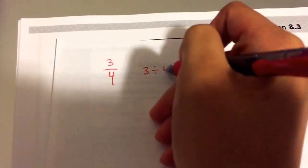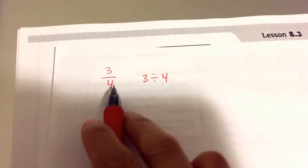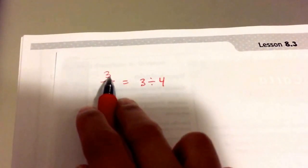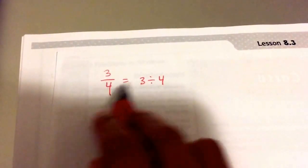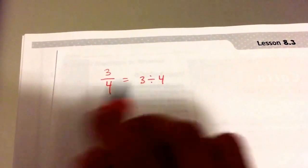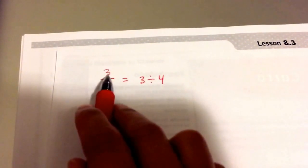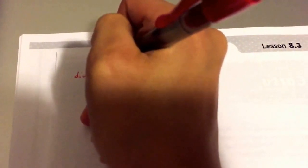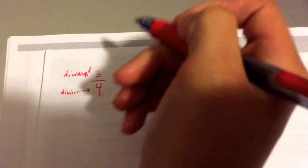3 divided by 4. 3 over 4, here's your numerator, and here's your denominator, is the same as 3 divided by 4. The numerator goes first, and the denominator goes second. This is the total that you have, and this is the amount of parts that you're splitting it into. So keep in mind, this is your dividend with the total. You have 3 of something, and this is your divisor, the amount of groups that you're breaking it into.